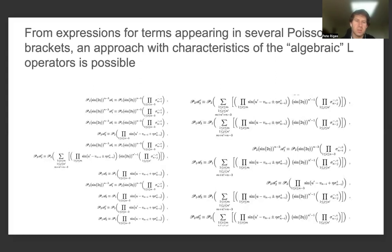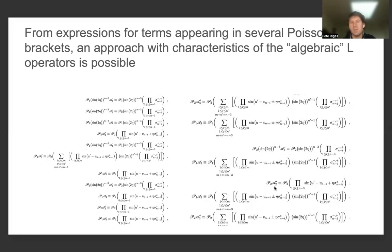From the expressions for the terms appearing in the several Poisson brackets, an approach with the characteristics of the algebraic L operators is possible. If we have the lower-dimensional L operator in mind — a simpler case than the higher-dimensional three-dimensional L operator whose entries have different algebraic interpretations — we can still make progress by looking at characteristics of special polynomials or determining connections with colored or universal R matrices, which have assumptions from representation theory introduced into these models.